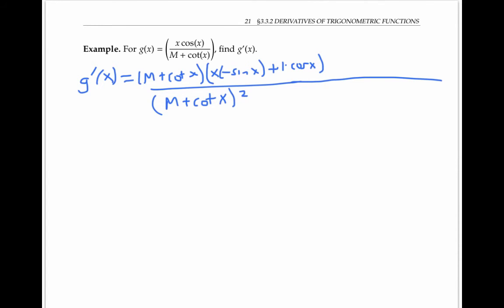Now I have to do minus high, x cosine of x, d low. The derivative of m is just zero because m is a constant, plus the derivative of cotangent, which is negative cosecant squared of x.